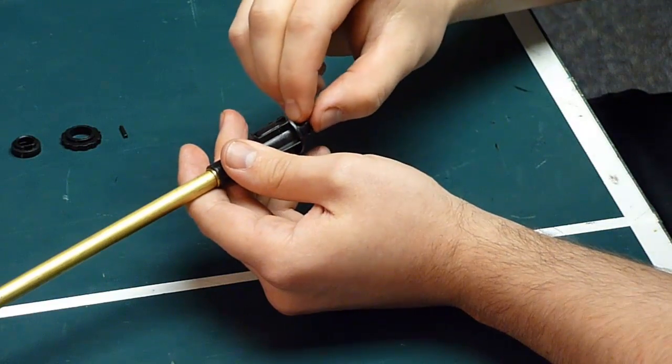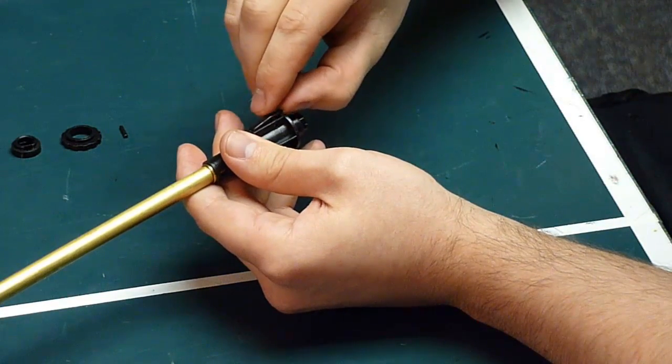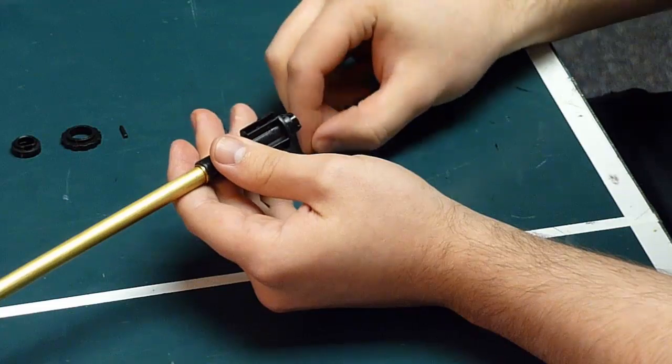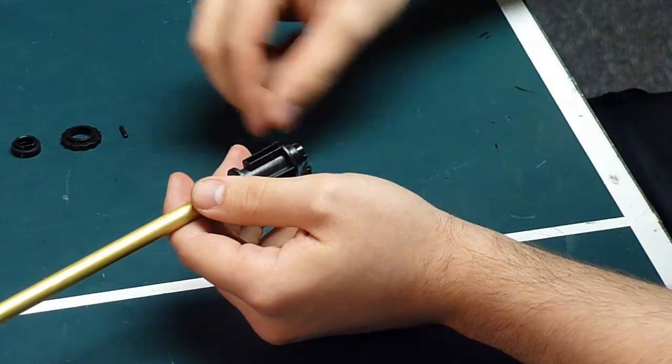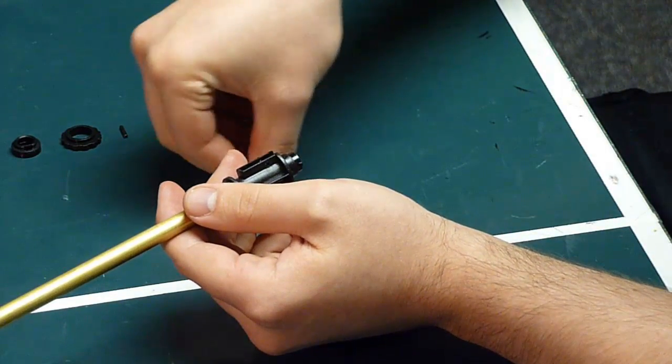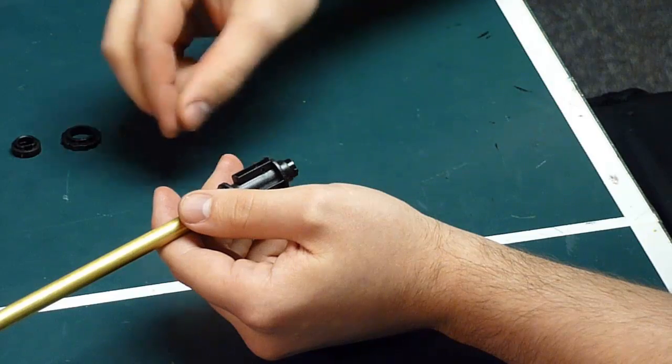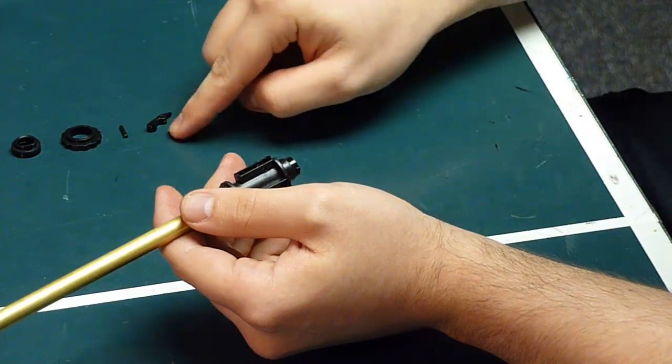Now that that's out, you're free to remove the hop-up arm here. Make sure your nub doesn't fall out like that. Make sure you keep an eye on it and keep it in the arm.